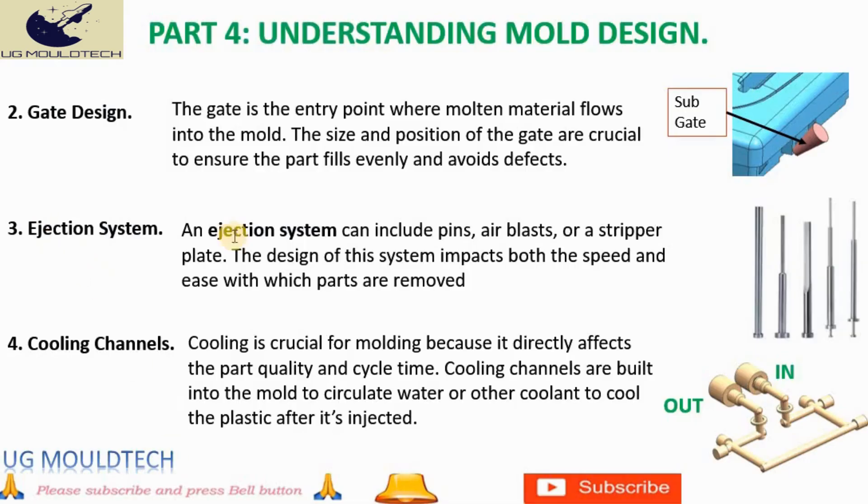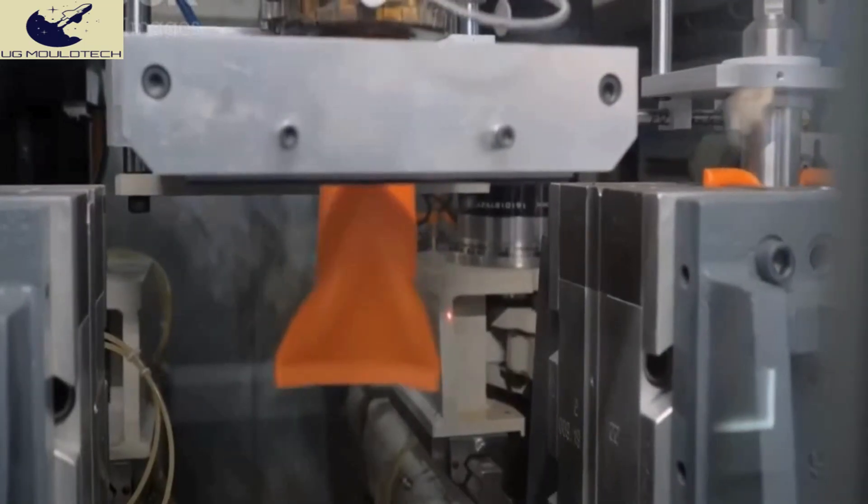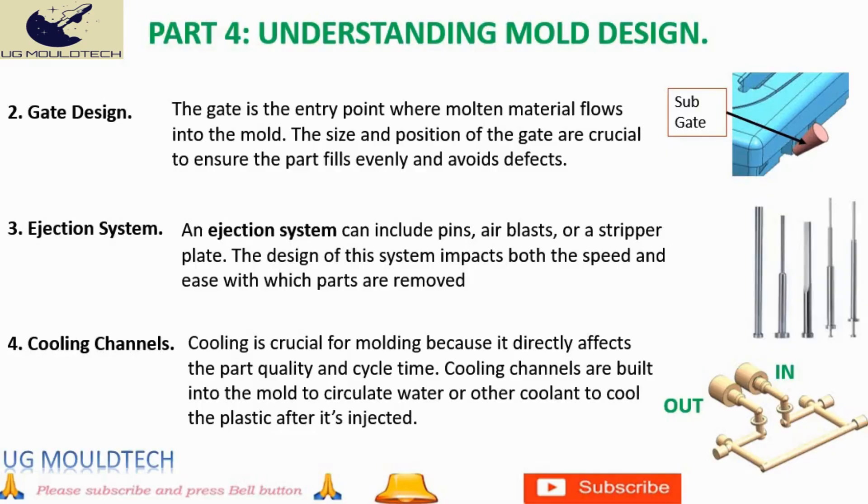Once the plastic part cools and solidifies, it must be efficiently ejected from the mold to maintain production speed. The ejection system can utilize various methods such as pins, air blasts, or a stripper plate to release the part. The design of the ejection system is crucial as it affects the speed, efficiency, and quality of part removal, ensuring minimal defects and downtime.